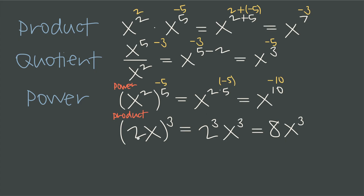If we have the power of a product — say (2 times x) raised to the power of 3 — we can distribute that exponent across the 2 and the x individually, simplifying to 2 cubed times x cubed, or 8x cubed. If instead this is negative 3, the rule still holds: we distribute that negative exponent across each factor. The result is 2 to the negative 3 times x to the negative 3. Since 2 to the negative 3 is 1 over 8, and x to the negative 3 is 1 over x cubed, both go in the denominator and the result is 1 over 8x cubed.